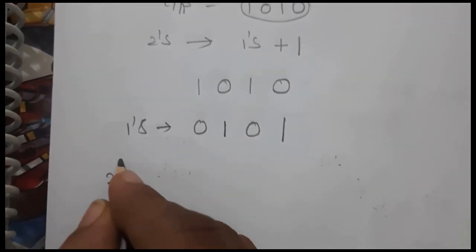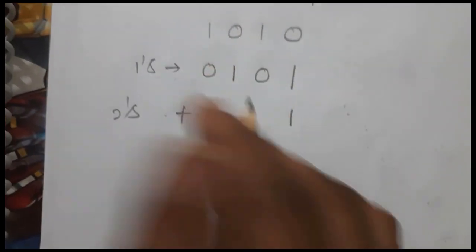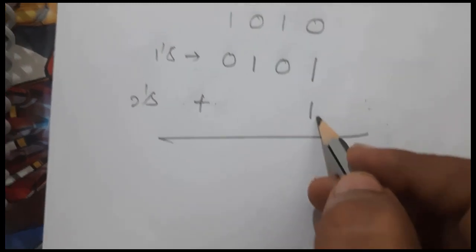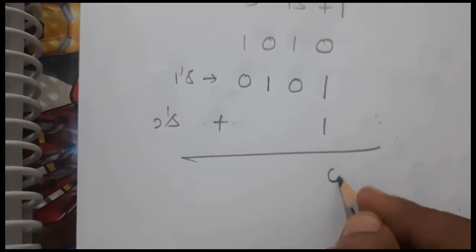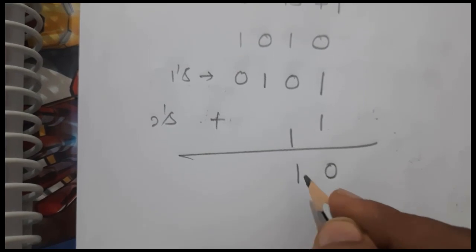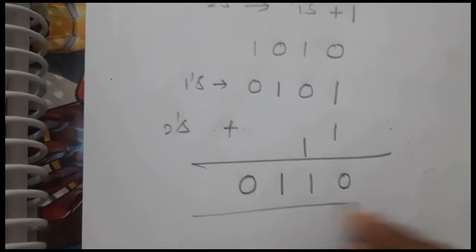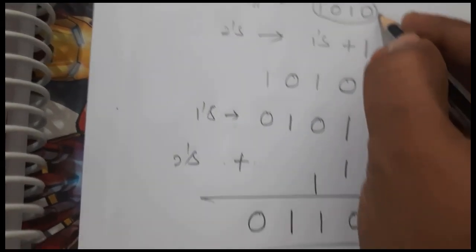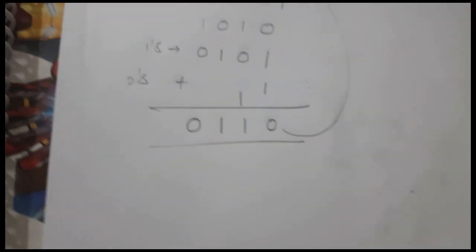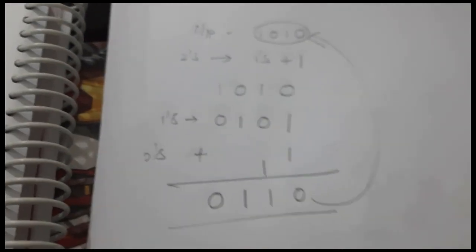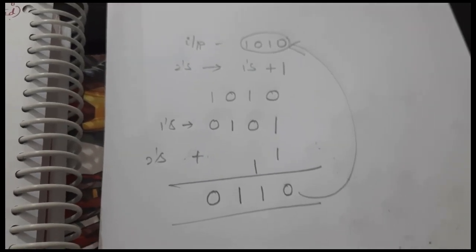After that, in order to get the 2's complement we add 1 to it. So 1 plus 1 gives sum 0 carry 1, and then we get 0 1 1 0. So this is the 2's complement of the given binary number.